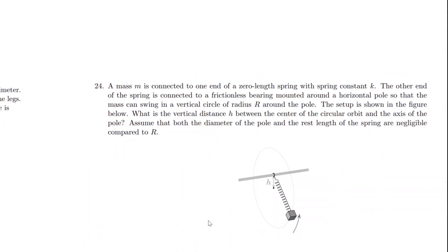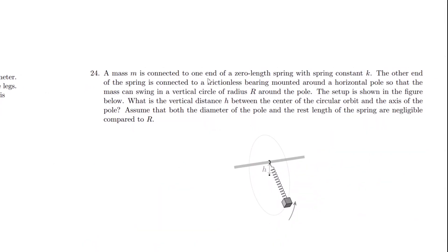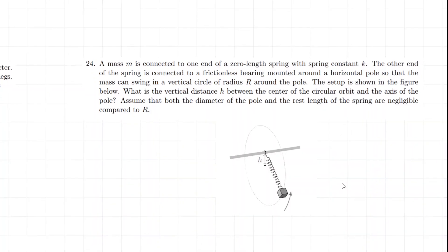In problem 24: a mass m is connected to a zero-length spring with spring constant k. The other end of the spring is connected to a frictionless spring mount around a horizontal pole so that the mass can swing in a vertical circle of radius r around the pole. There is a vertical distance h between the center of the circular orbit and the axis of the pole. Assume both the diameter of the pole and the rest length of the spring are negligible compared to r.